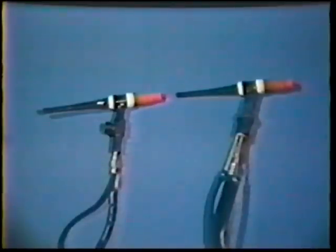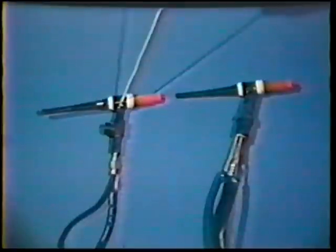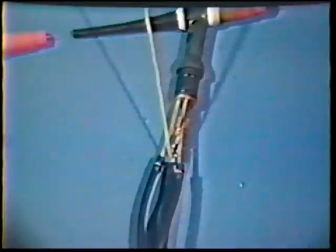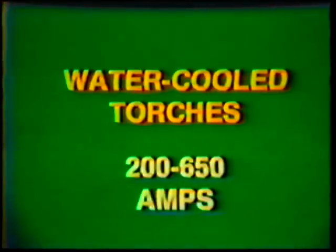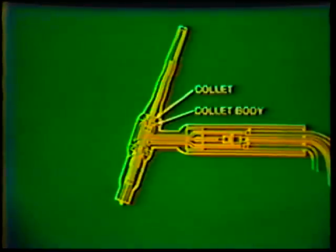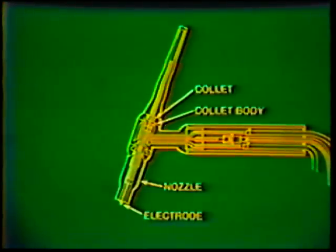The torches for gas tungsten arc welding can be either air-cooled or water-cooled. Air-cooled torches are normally used in applications where lower amperage levels are required. The handle of the torch provides passages for the shielding gas and the electrical power. Water-cooled torches are similar to the air-cooled, except that additional passages are required within the torch to transport the coolant. These torches are normally used in higher amperage applications in the range from 200 to 650 amperes. The body of the torch contains the collet and the collet body for holding the tungsten electrode, and also provides a means for mounting the gas nozzle and the electrode protective cap. Nozzles can be made of ceramic, metal, or glass; the ceramic types are the most common.